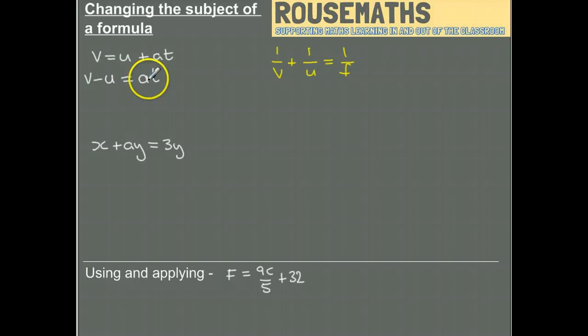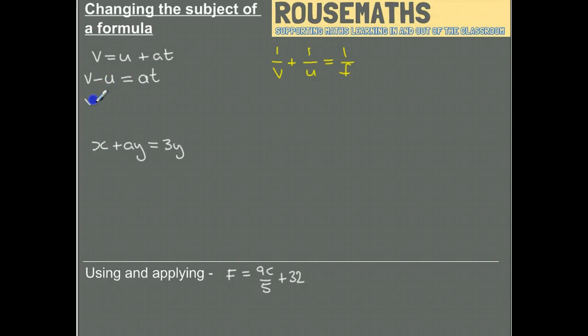So that's getting a bit closer to getting a as a subject, but a is being multiplied by t at the moment. So I'm going to divide by t. If I divide by t on the right-hand side, we get that. So now we've got a equals v minus u over t, and we have made a the subject.